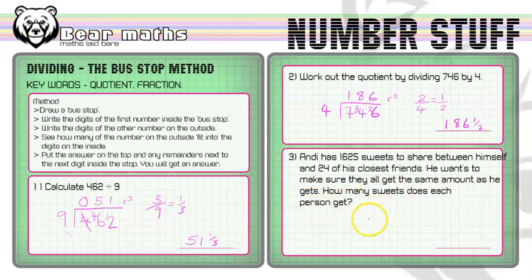So first of all, we have to think about possibly writing this as a fraction. Because you could write as a fraction instead of writing it in the bus stop. You could do 1,625 divided by 25. Now, I've done 25 instead of 24 because he's included in this as well. That's something that could throw you potentially. So what do both these numbers divide by? Well, they definitely divide by 5. That's a nice thing to think of. So we could think of dividing each of these numbers by 5.